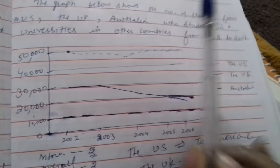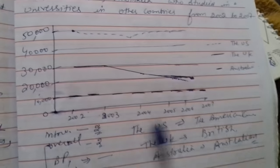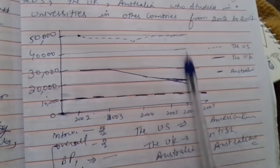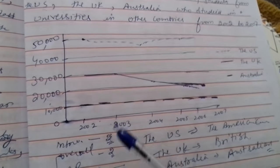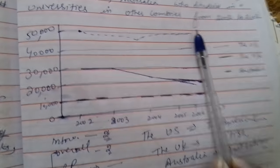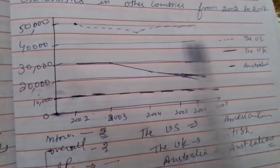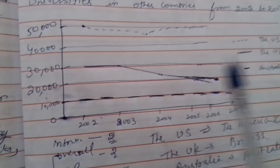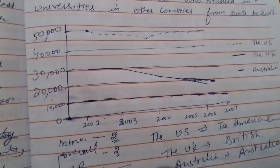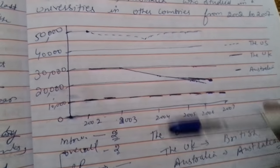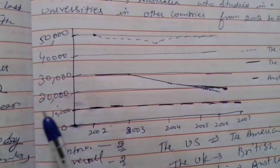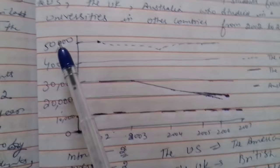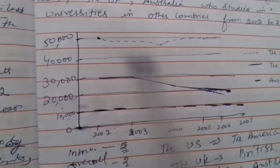You can write: American students, British students, and Australian students who studied in universities of other nations over a six-year period of time starting from 2002, or between 2002 and 2007. This is the structure. It should be complex and connected.